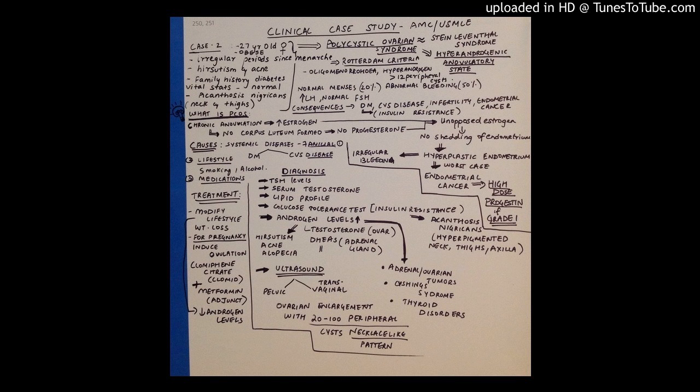What happens is there is no progesterone in this condition, which is very important for the shedding of the endometrium layers. Because there's no corpus luteum that's formed and because that doesn't give rise to increased progesterone levels, there is no shedding of the endometrium. When there is no shedding, what happens is there will be hyperplasia. So there is a hyperplastic endometrium which is what happens in polycystic ovarian syndrome.